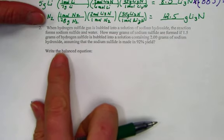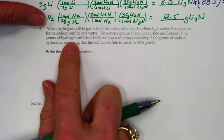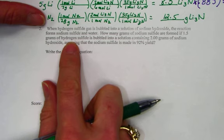I'll read the question through for number two. When hydrogen sulfide gas is bubbled into a solution of sodium hydroxide, the reaction forms sodium sulfide and water.